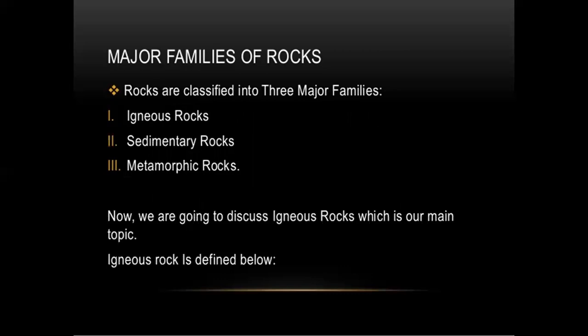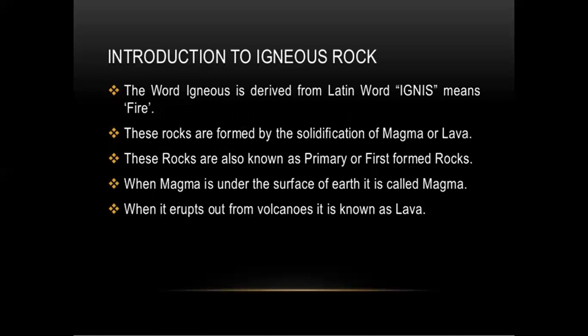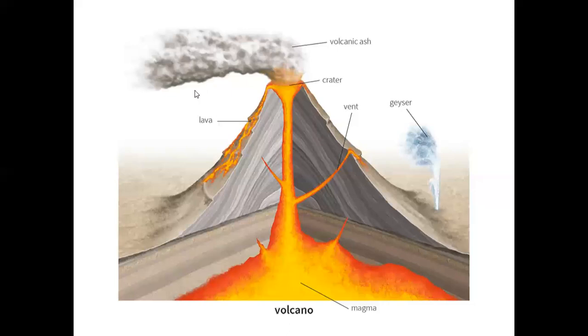Igneous rocks. The word igneous is derived from the Latin word meaning fire. These rocks are formed by solidification of magma or lava. They are also known as primary or first-formed rocks. When magma is under the surface of the earth, it is called magma. When it erupts, it is called lava. That means inside it is magma, and outside when it comes out, it is lava. In this figure you can see the magma, and when it comes out it flows in the form of lava. By this way, your igneous rock is formed.